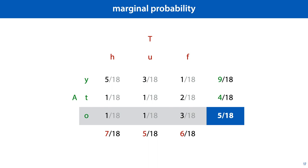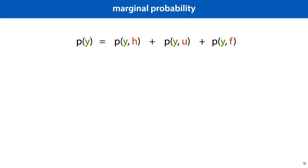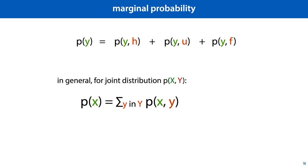If we want to focus on just one random variable, all we need to do is sum over the rows or columns. For instance, the probability that age equals old, regardless of the value of teeth, is the probability of old and healthy, plus old and unhealthy, plus old and false. Because we can write the sums of these in the margins of our joint probability table, this process of getting rid of a variable is also called marginalizing out — as in, we marginalize out the variable t. The resulting distribution over the remaining variable is called a marginal distribution. We sum the joint probabilities for all values of one of the random variables, keeping the value of the other fixed. For a joint distribution p(x,y), we can express the marginal probability with a capital sigma notation iterating over all possible values of y.